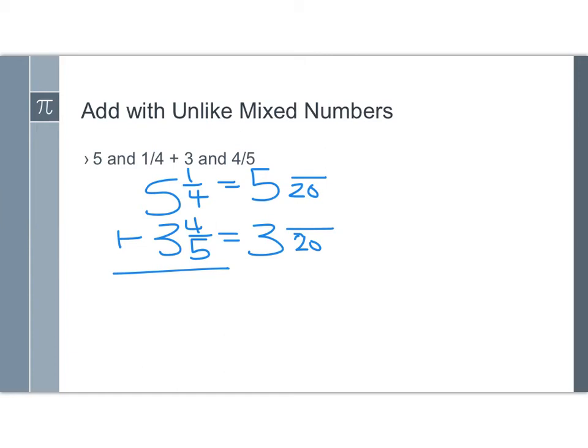Then to find the equivalent fractions, we ask ourselves, what do we multiply the denominators by? And we'll do the same thing to the numerator. I multiply 4 by 5 to get 20, so I would do the same thing to the 1, which gives us 5. I multiplied 5 by 4 to get 20, so I do the same thing to the numerator and I get 4. 4 times 4 is 16.